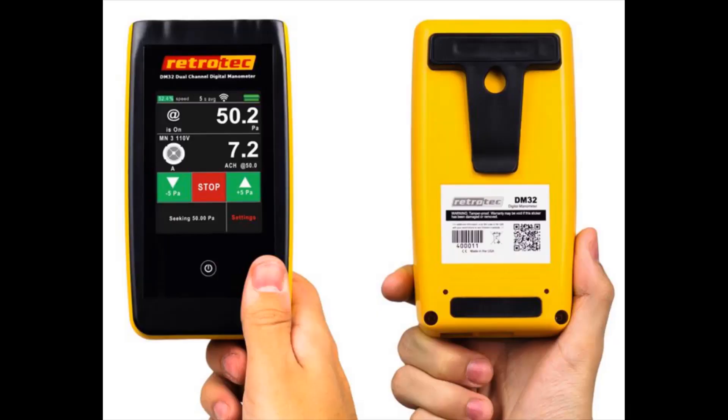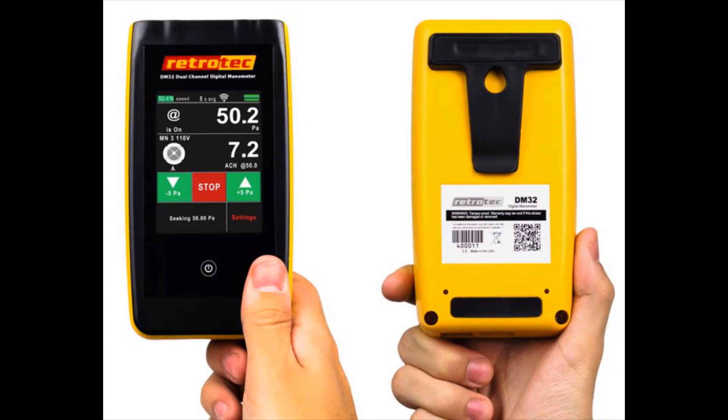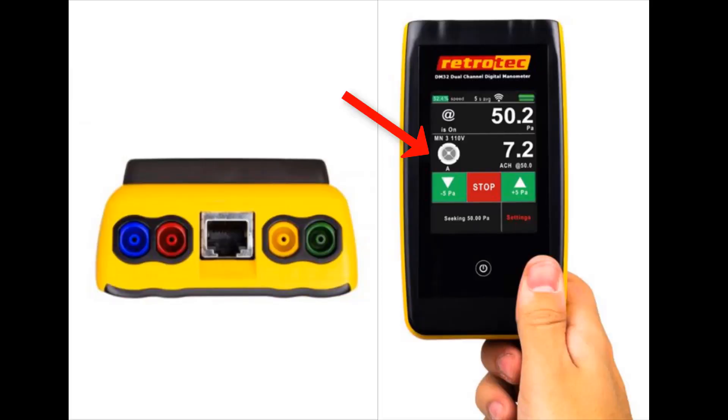The DM32 doesn't need this additional tube connected because the gauge is smart enough to know to cancel out that pressure induced by the blower door. When the blue input port on the A channel feels a positive pressure while a blower door is selected, it will mathematically remove that additional pressure from the equation.